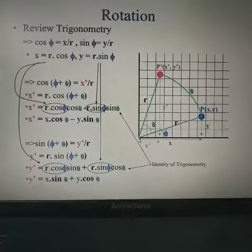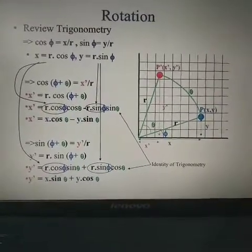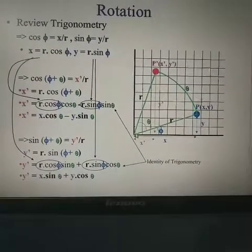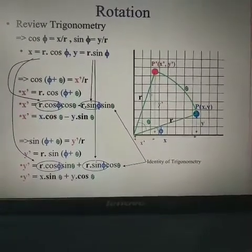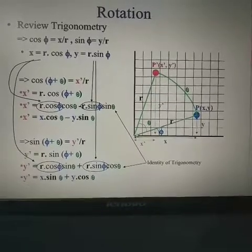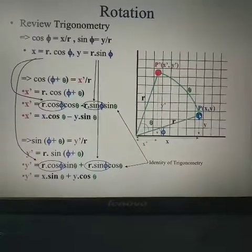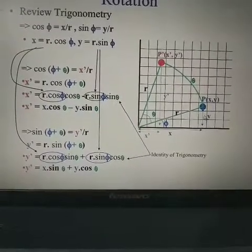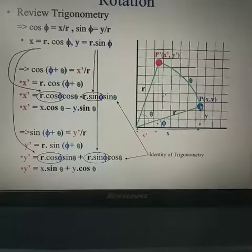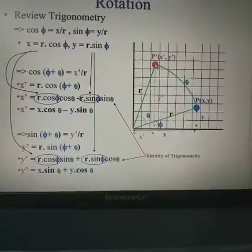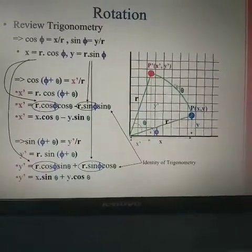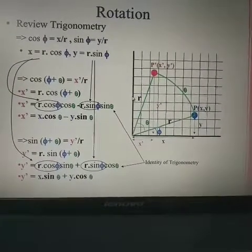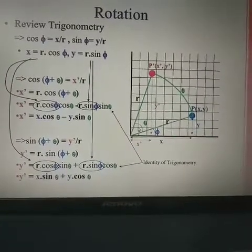Starting from the origin, we have a point, and we rotate through that same point from the origin to a new position. This is the anti-clockwise direction — we rotate the point anti-clockwise.